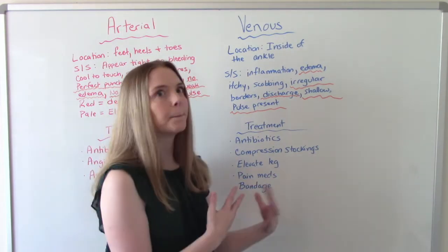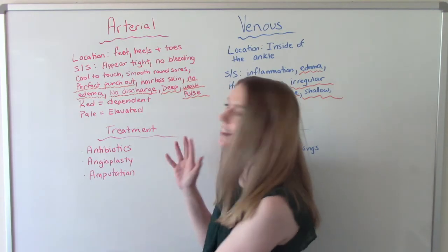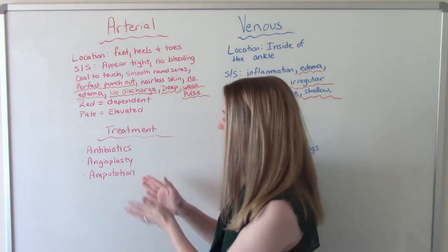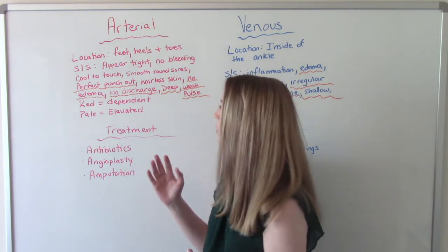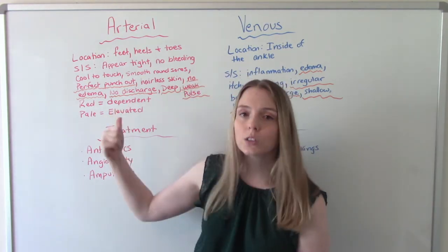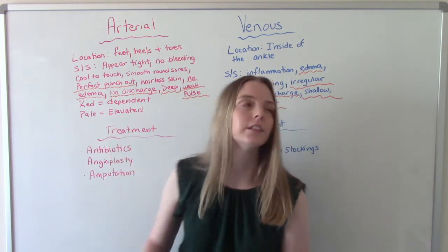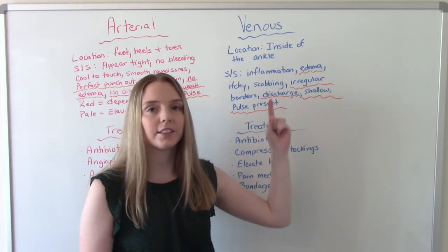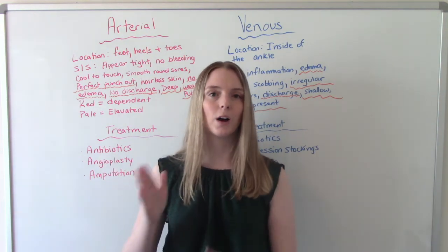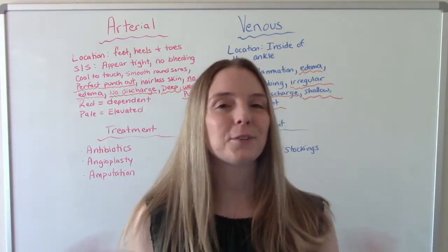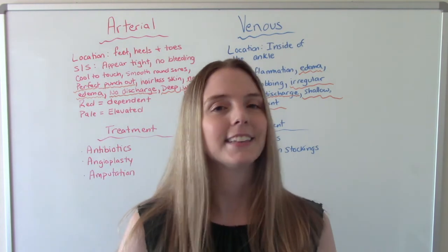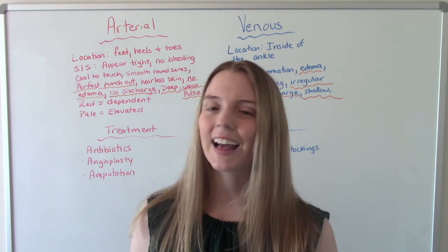Venous ulcers can take months to heal depending on size. Arterial ulcers can also take months, but in extreme cases they'll never heal, which is when amputation becomes necessary. Notice how the signs and symptoms are nearly opposite: arterial ulcers have no swelling, no discharge, perfect circular shape, and are very deep; venous ulcers have swelling, discharge, irregular borders, and are shallow. Comparing these opposites will really help you differentiate them. I hope you found this helpful — don't forget to like and subscribe!